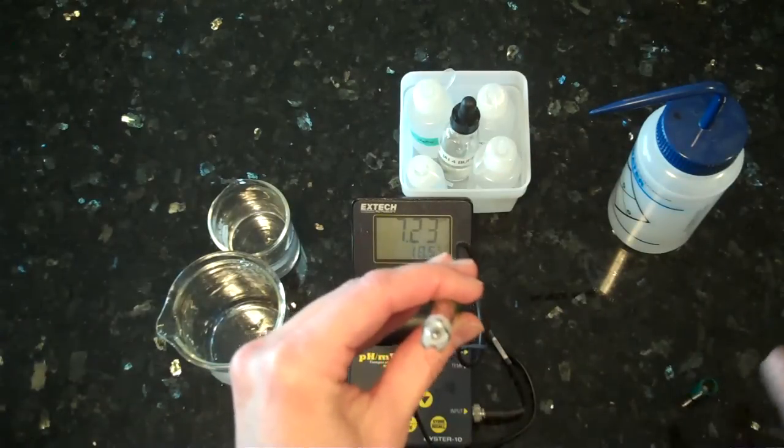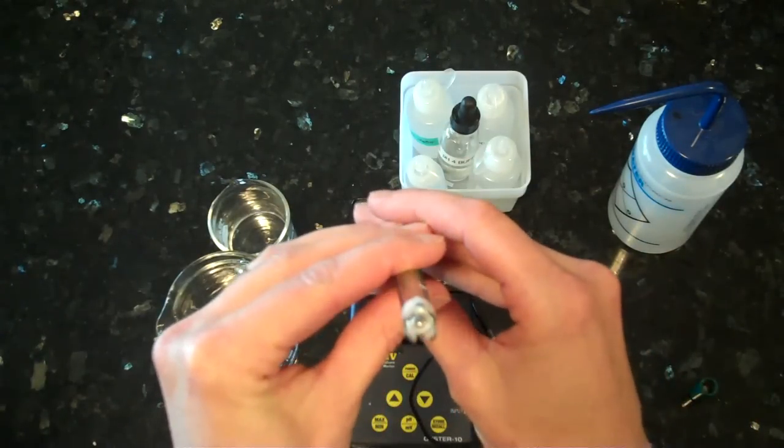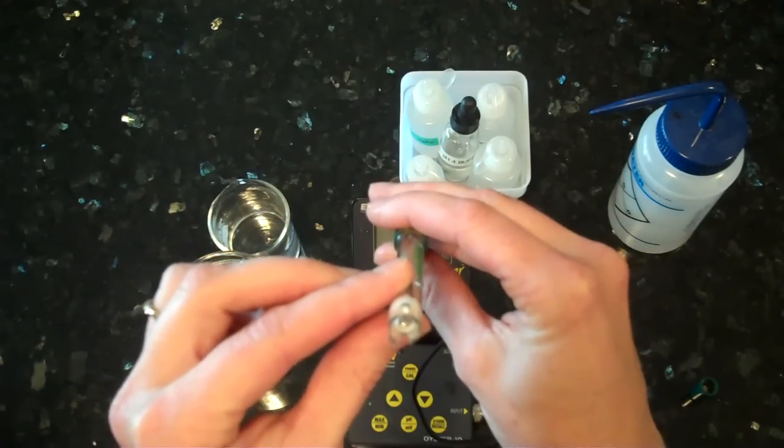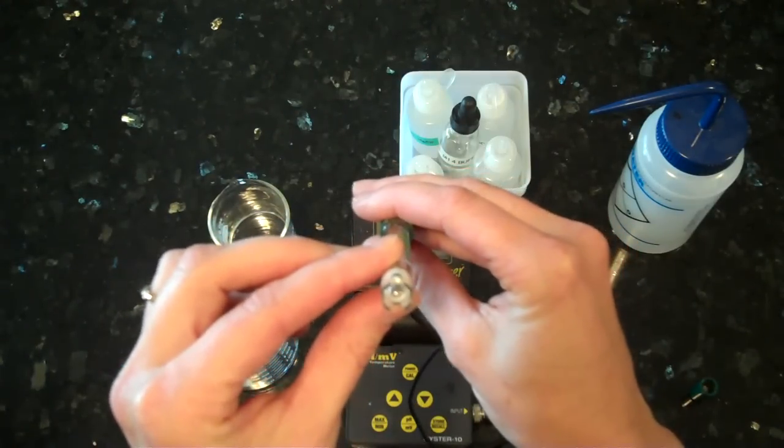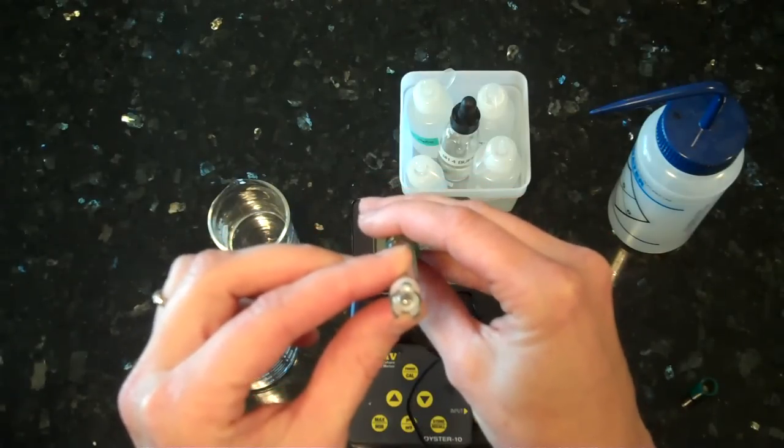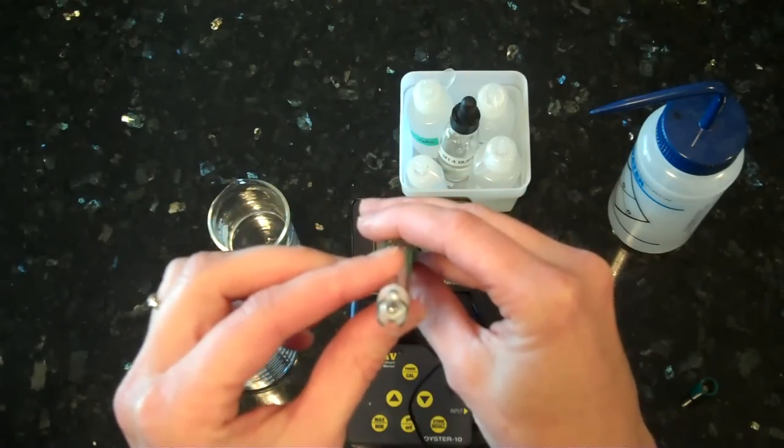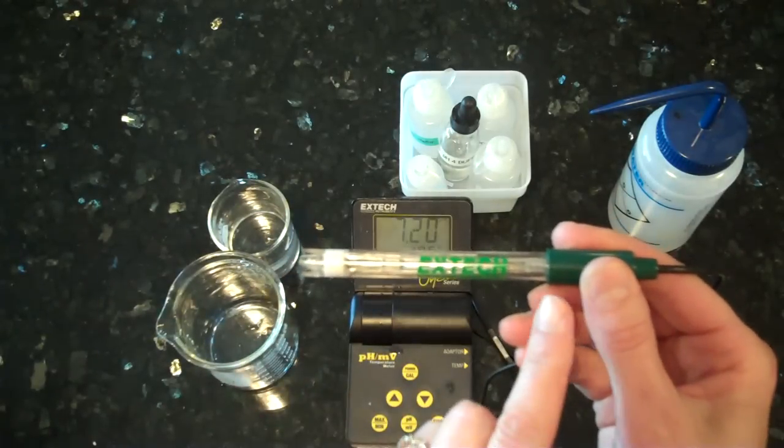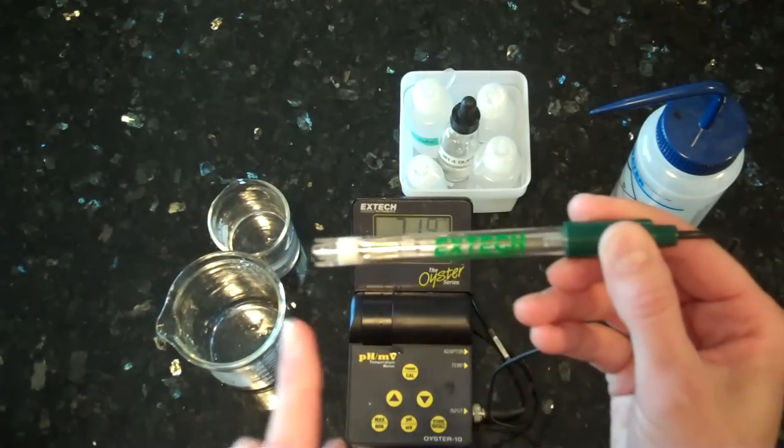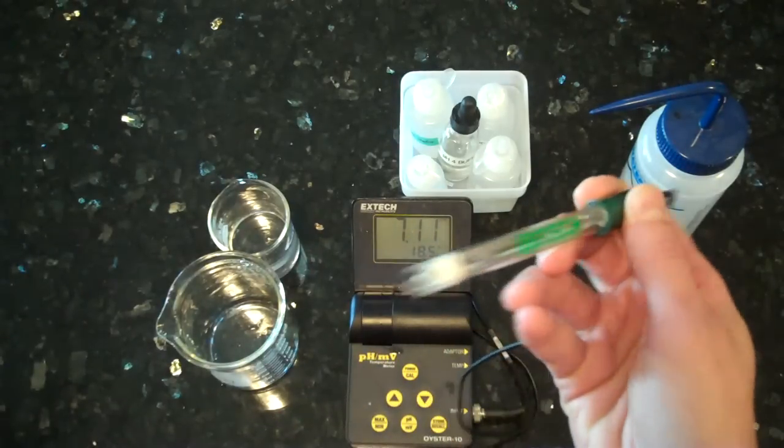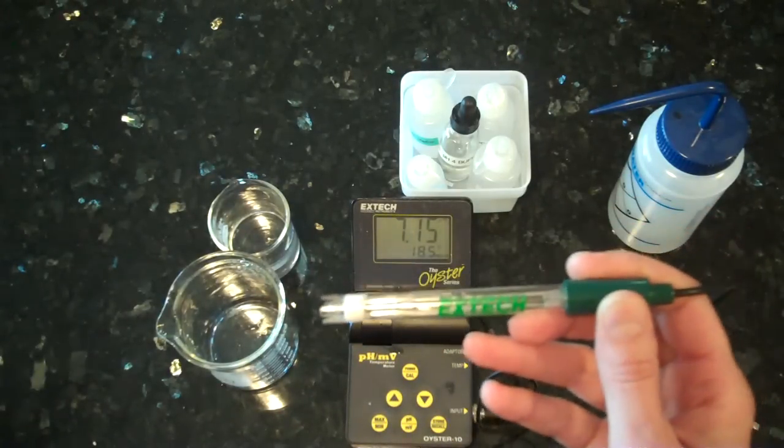The second thing I want you to see is the pH probe itself. If you look inside, you'll see a little glass bulb, and this little glass bulb is actually what does the sampling of the solution. The bulb is very fragile and can break easily, so please be aware that even though it appears to be made of plastic, the sheath only partially covers the bulb, and the bulb can break if not treated properly.